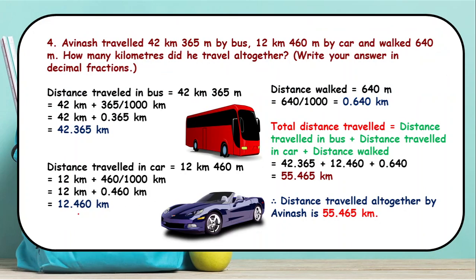After that we have a word problem. Aminash travelled 42 kilometers 365 meters by bus, 12 kilometers 460 meters by car, and he walked 640 meters. How many kilometers did he travel altogether? We need to write the answer in decimal fractions.